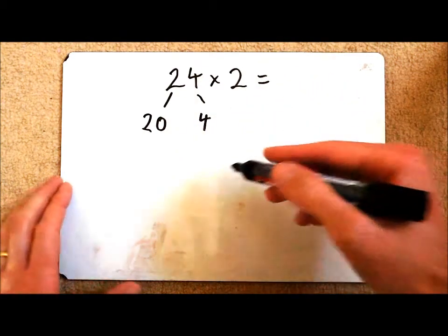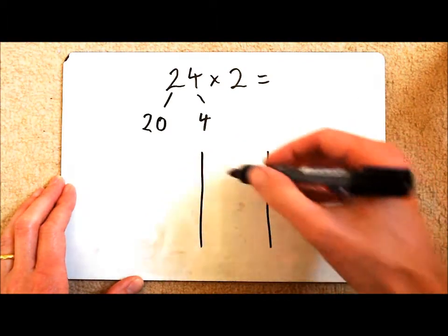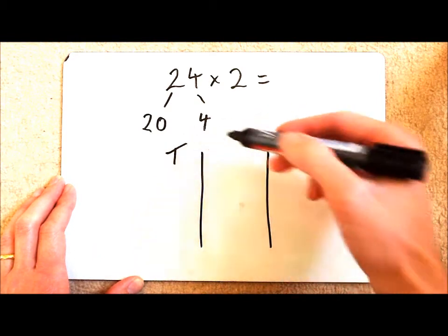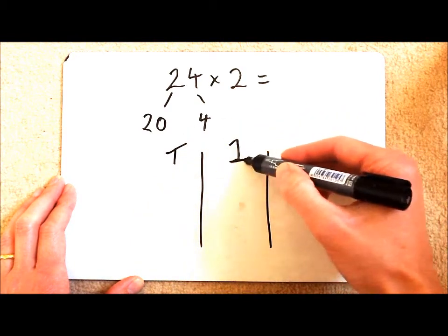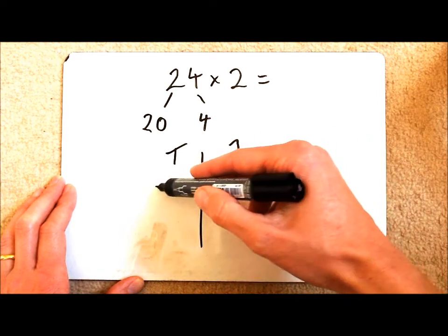I'm going to then lay out my grid. So I have my tens number over this side, my ones number in this column and what I'm multiplying by over in this column.